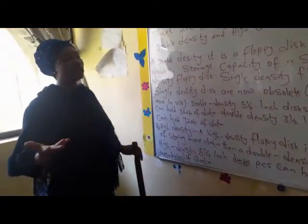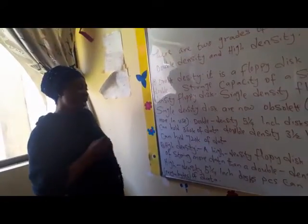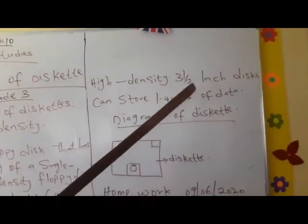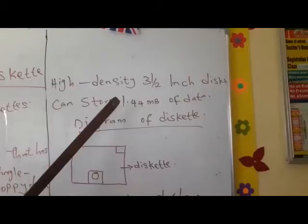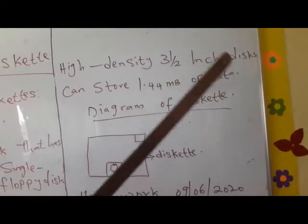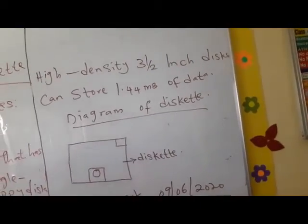That is your data, your information. How much information you are going to store depends on the megabyte on your phone. High density, 3.5 inch density, you can store 1.44 MB megabyte of data. You know the meaning of data already as I explained to you.